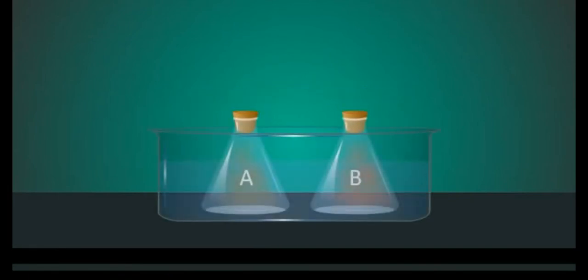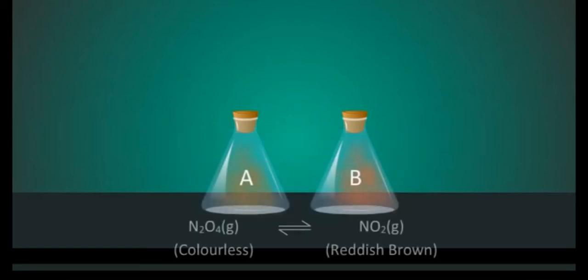After some time, when both the flasks attain the temperature of the bath, the color in two flasks become identical and no further change in color occurs. This constancy of color indicates that equilibrium has been attained in both cases and both contain mixture of NO2 and N2O4 of the same composition.